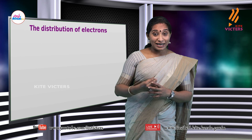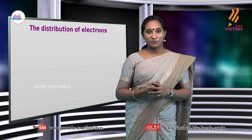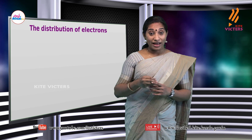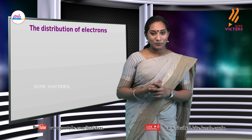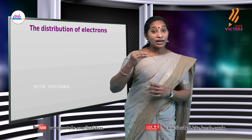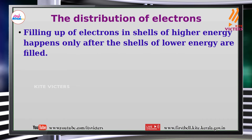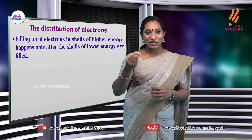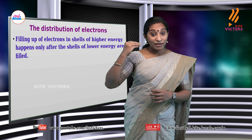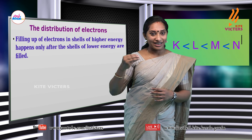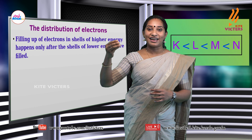The distribution of electrons in an atom follows certain principles. We shall study the basic principles now; others you will study in higher classes. The first principle: filling up of electrons in shells of higher energy level happens only after filling the lower energy level. That means the lower energy level fills first. Among shells K, L, M, and N, K has the lowest energy. So electrons will be filled first in K shell, then L, M, N, and so on.